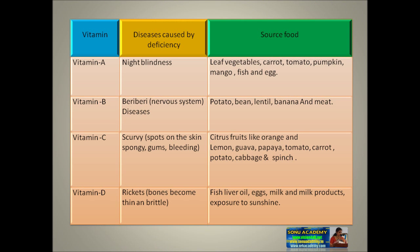Let us see the food sources to avoid these deficiency diseases. For Vitamin A, the deficiency disease is night blindness, and it can be reduced by eating food sources such as leafy vegetables, carrot, tomato, pumpkin, mango, fish, egg, etc.